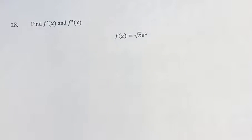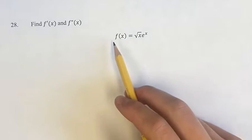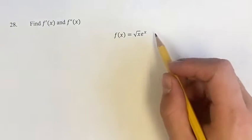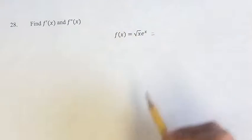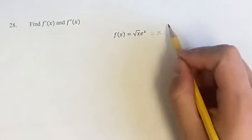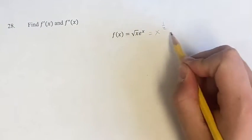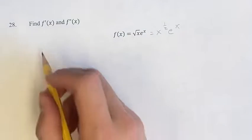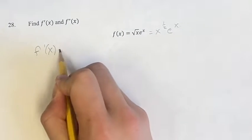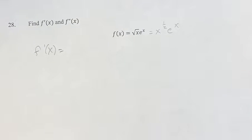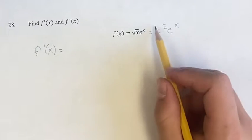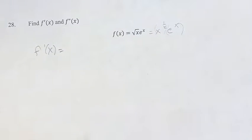Hello, and welcome back to another video. In this problem, I'm going to find the first and second derivative of f(x) equal to the square root of x times e to the x. First thing we're going to do is turn the square root of x into x to the 1/2. This will make it easier to find the derivative. Our first step is to use the product rule, since this is x to the 1/2 times e to the x.